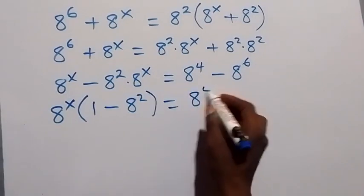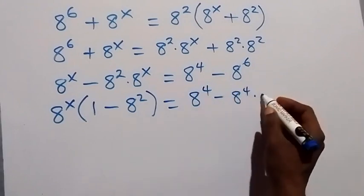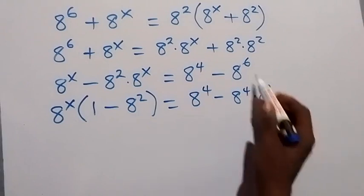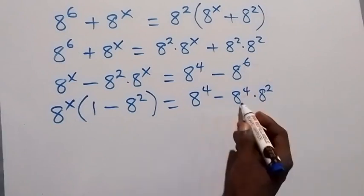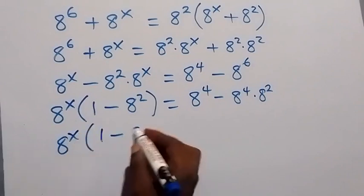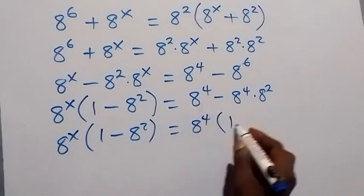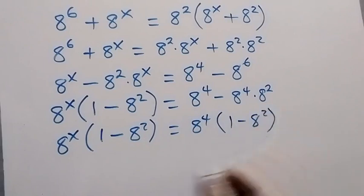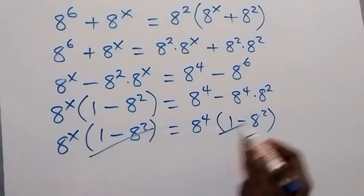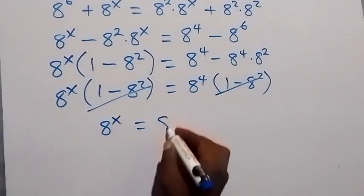On the right side, we can write this as 8 raised to the power 4 minus 8 raised to the power 4 times 8 raised to the power 2. From the law of indices, since this gives 8 raised to the power 6, we can factor 8 raised to the power 4 out. So we have 8 raised to the power x into bracket 1 minus 8 squared, equals to 8 raised to the power 4 into bracket 1 minus 8 squared. Since 1 minus 8 squared is common on both sides, we divide both sides by it. They cancel out, and we are left with 8 raised to the power x equals to 8 raised to the power 4.